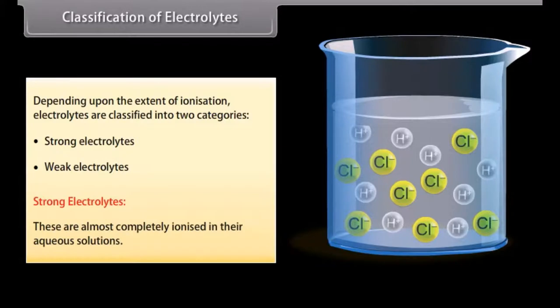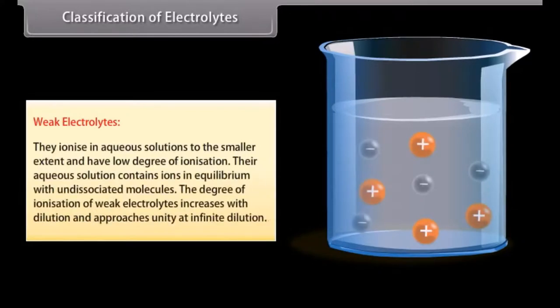Classification of electrolytes. Depending upon the extent of ionization, electrolytes are classified into two categories: strong electrolytes and weak electrolytes. Strong electrolytes are almost completely ionized in their aqueous solutions — for example, HCl, NaOH, and KCl. Weak electrolytes ionize in aqueous solutions to a smaller extent and have a low degree of ionization; their aqueous solution contains ions in equilibrium with undissociated molecules. The degree of ionization of weak electrolytes increases with dilution and approaches unity at infinite dilution — for example, NH4OH and CH3COOH.